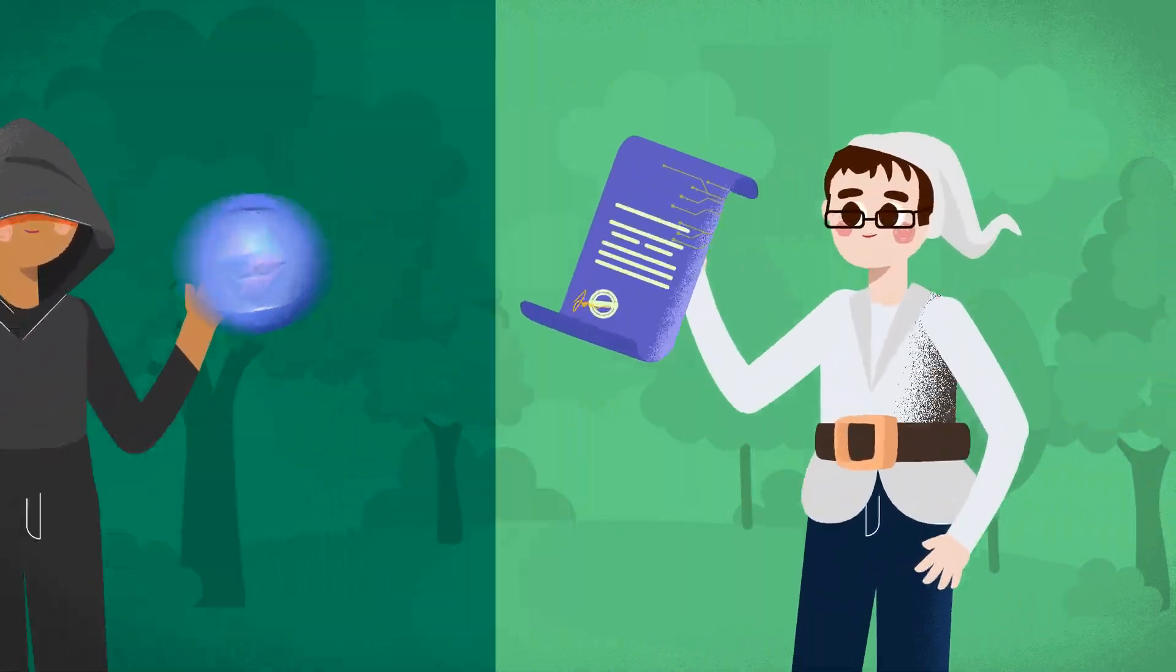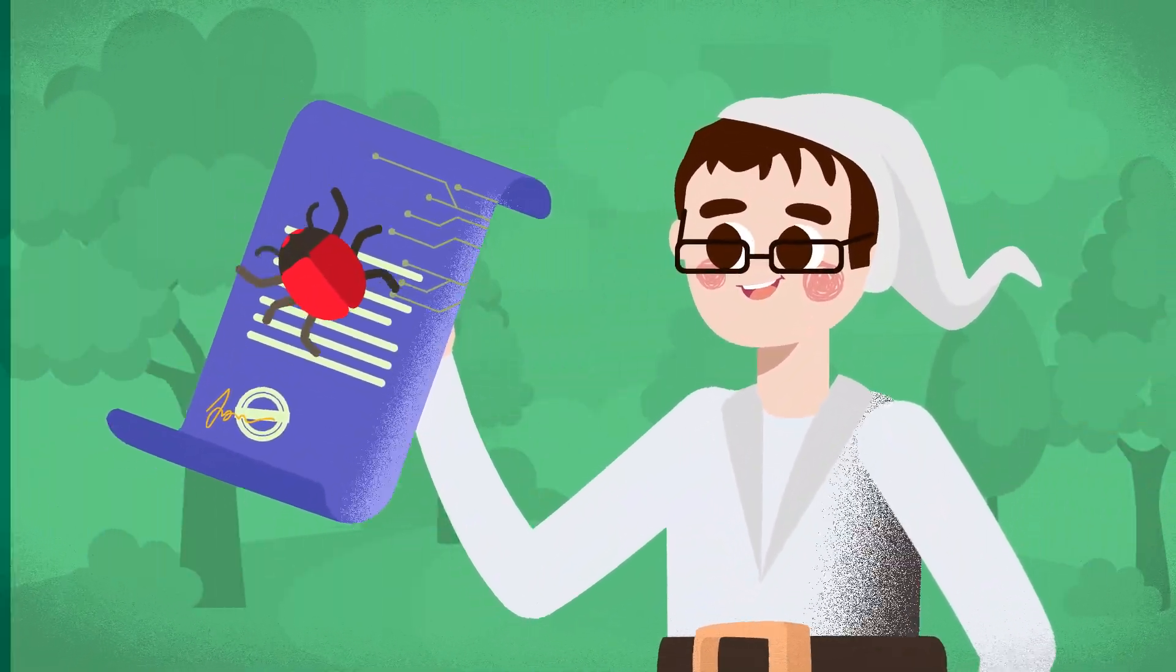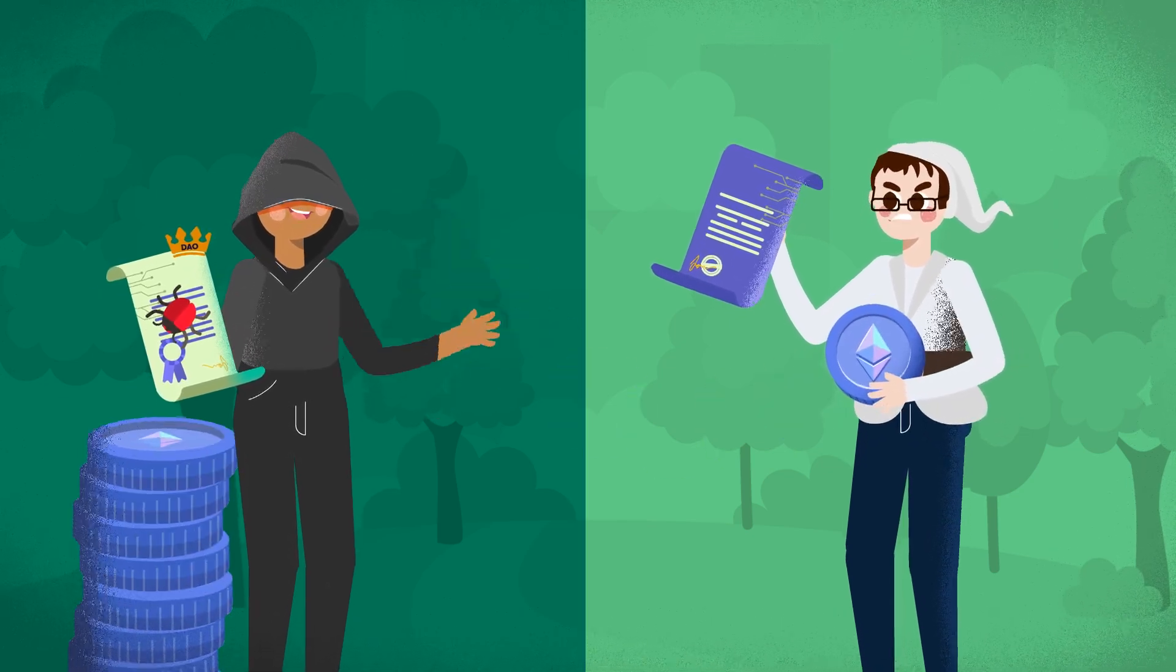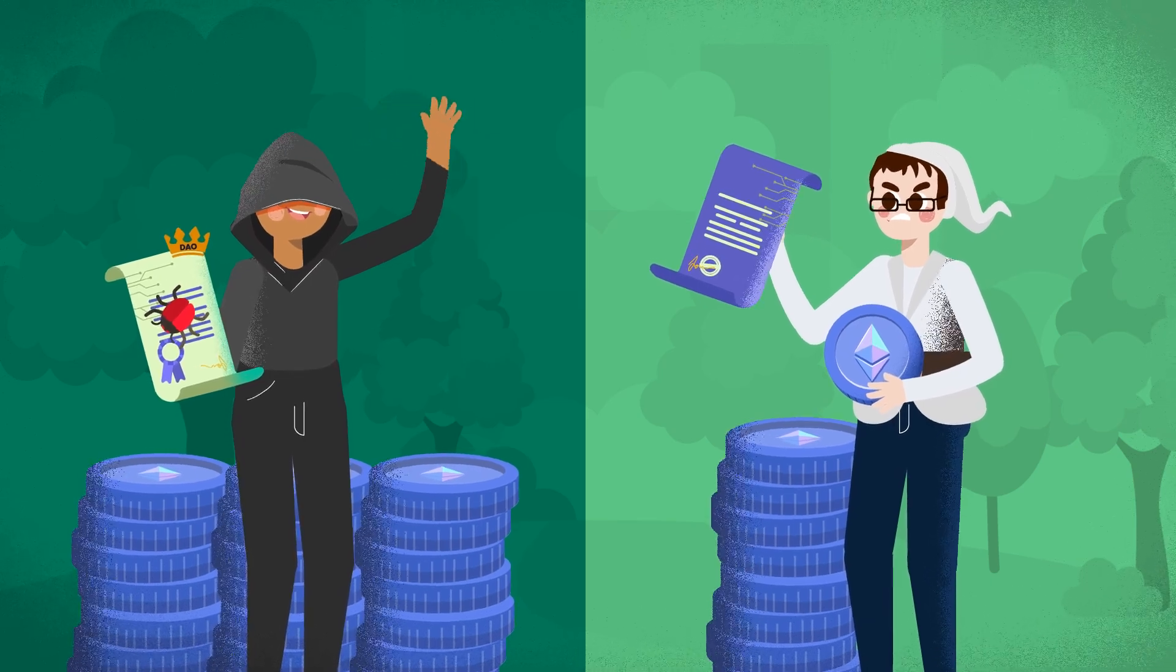A group of white-hat hackers called the Robinhood Group emerged and used the same exploit to recover part of the stolen funds. However, the majority of the siphoned funds remained unrecoverable.